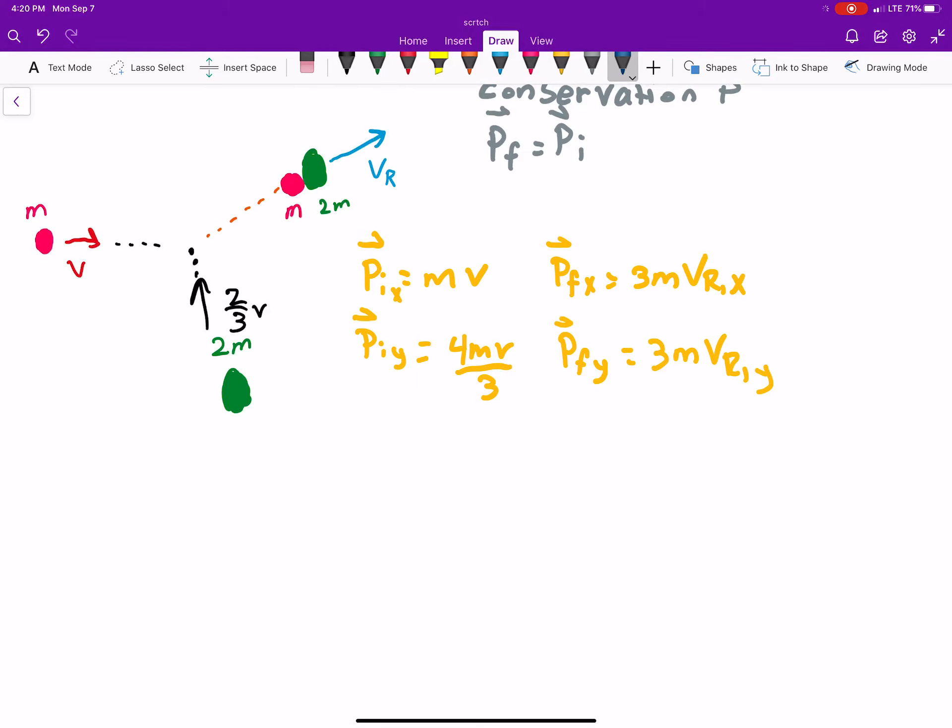And we're saying momentum final is equal to momentum initial. Momentum in the x direction, momentum final in the x direction, is 3m, the velocity in the x direction that we're looking for. So, vrx equals, the only momentum we have in the x direction initially, is just mv.